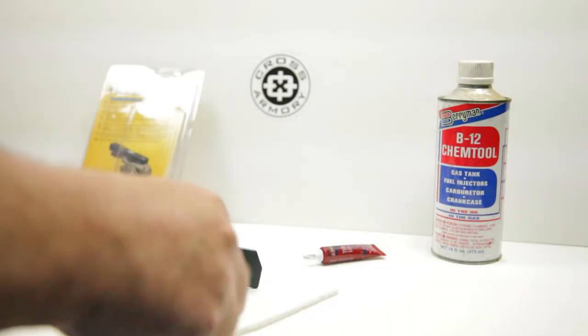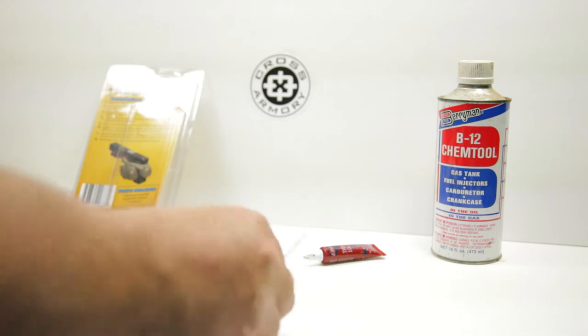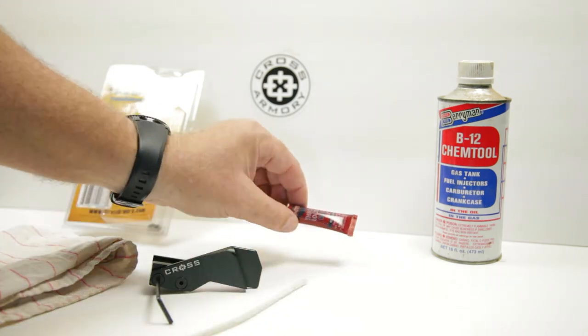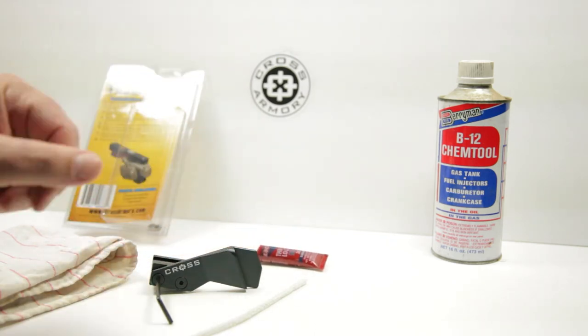Today I wanted to create a video showing the proper use of thread locker when installing components on your firearm. All components that are machined have oil residue left over from the manufacturing process. This includes screws as they are machined as well.